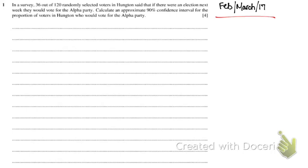The first question says: in a survey, 36 out of 120 randomly selected voters in Huntington said that if there were an election next week, they would vote for the Alpha Party. We have to calculate an approximate 90% confidence interval for the proportion of voters who would vote for the Alpha Party. This is not for the mean — this is for proportions.